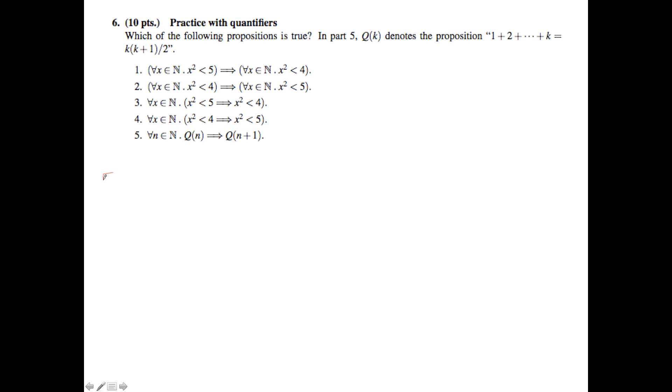So in part 5, we want to see if for all n, again this is on the outside, if Q of n implies Q of n plus 1. Well if Q of n is false, then we have nothing left to do and this proposition is vacuously true. So let's try to show that Q of n true implies that Q of n plus 1 is true.